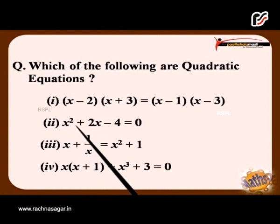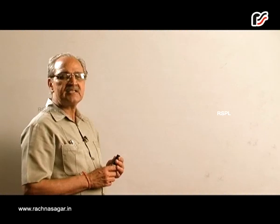Second, x² + 2x - 4 = 0. Third, x + 1/x = x² + 1. Fourth, x(x + 1) + x³ + 3 = 0.